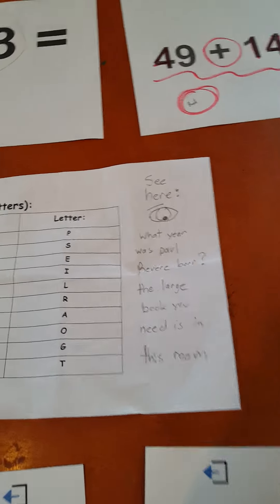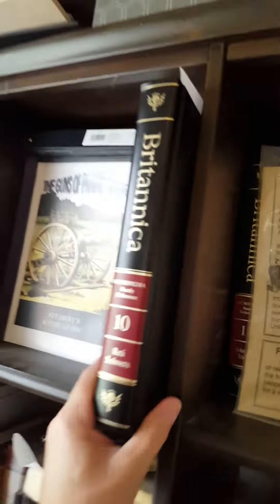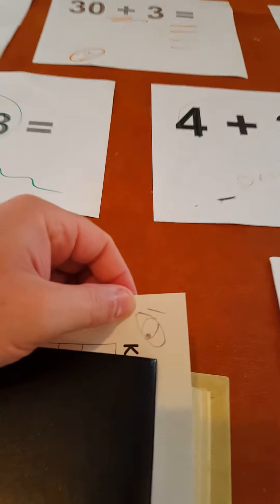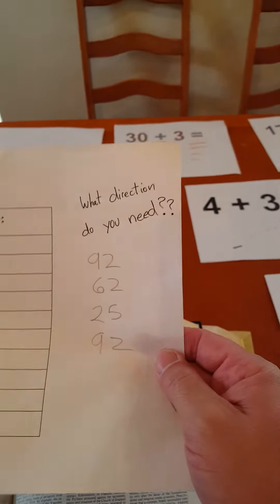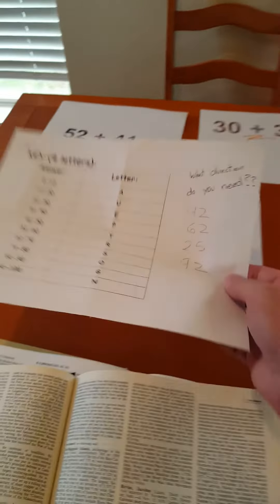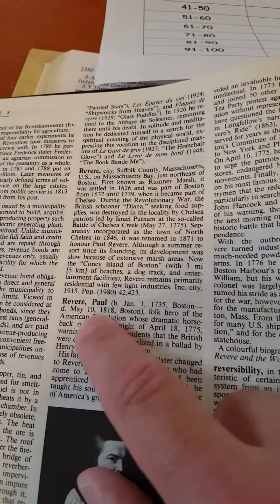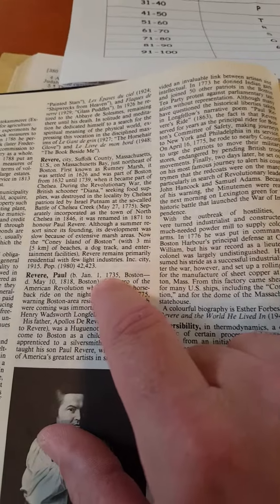The other clue asks for the year Paul Revere was born. You might find that in an encyclopedia, and in our room we have a bunch of encyclopedias. So the kids would walk over, find the R volume for Revere, and there's even a piece of paper in there too — with an eyeball indicator. Paul Revere was born in 1735. My kids initially keyed in on 1818, which was when he died, so I had to give them a hint. But 1735 is four digits and we have a four-digit lock — let's try that.